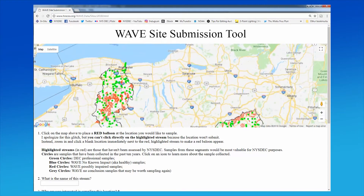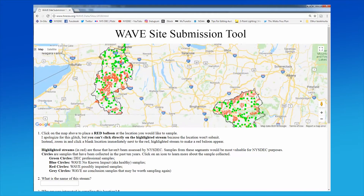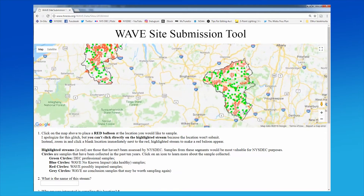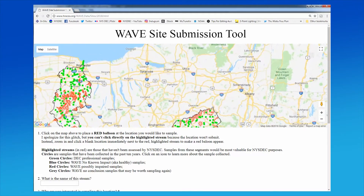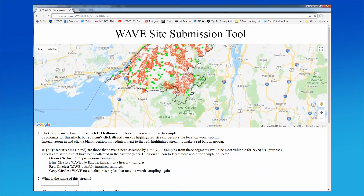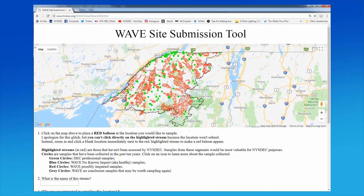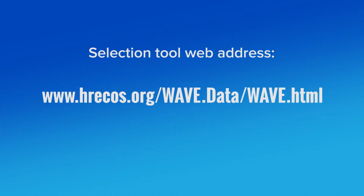That being said, we will also accept samples from locations on previously assessed streams that are important to the local community. See the WAVE instructions booklet for examples of how communities are using WAVE to take action at the local level. This site submission tool will help you to identify a sampling location and communicate with the WAVE coordinator. The URL for this website is provided in the WAVE instructions booklet.